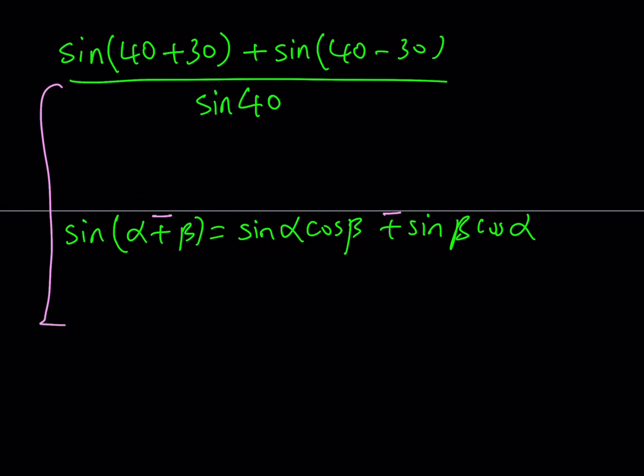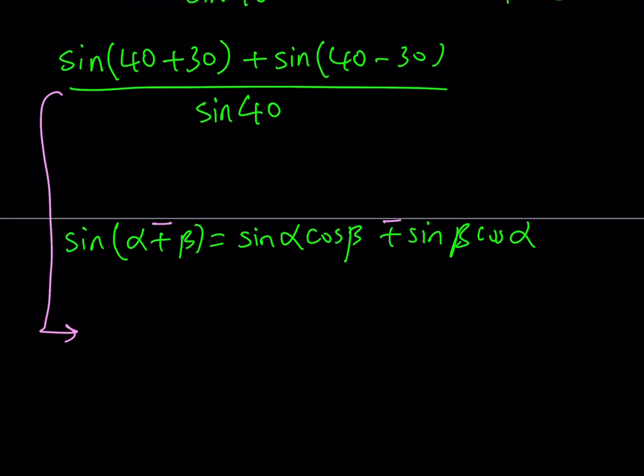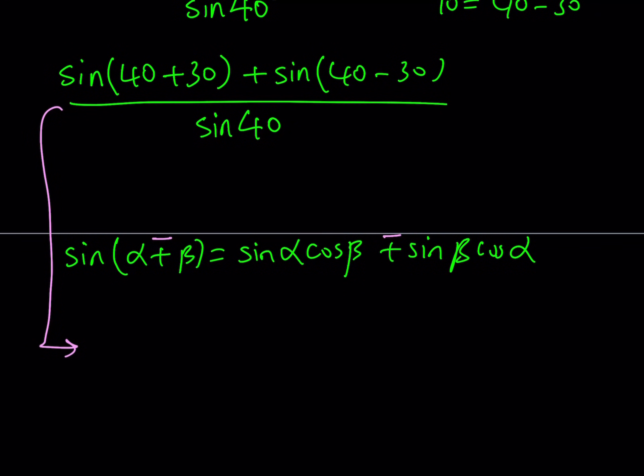So using those formulas, we can express this as a sum of two things. We can write sine 40 cosine 30 plus sine 30 cosine 40 for the first part, and then I'm just going to move this a little bit to the left so I have more room.